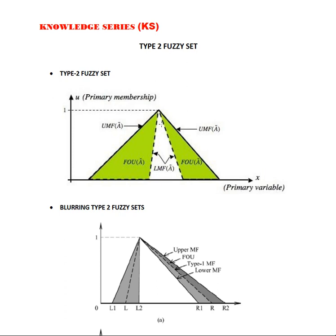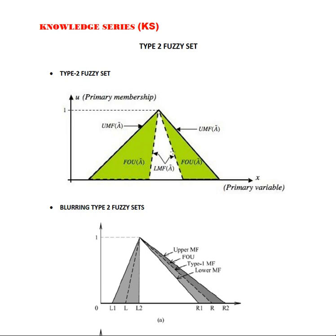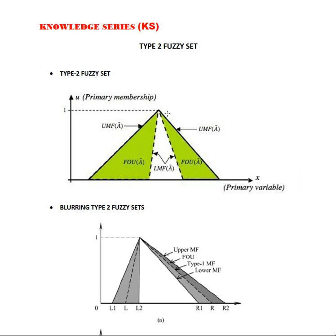Here, we can see the dotted area and the upper membership functions shown with the sharp edge. In both sides, the upper membership function is having a sharp edge, and inside the dotted line we can say that it is a lower membership function. So both of which are of the type of the Type 1 fuzzy set.